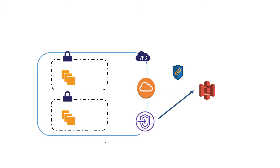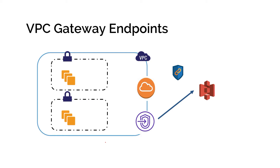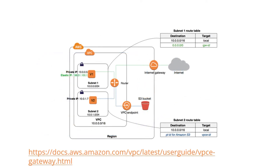This network is powered by AWS private network and we call this VPC gateway endpoints. Here is another diagram from the AWS documentation. We have a VPC within a region that has two private subnets, and one of the subnets has an EC2 instance with an elastic IP address. The traditional way of doing it is the EC2 instance connects to your router, and all the communication is routed to an internet gateway, which sends the traffic through the internet gateway to your S3 bucket.